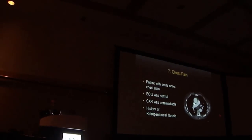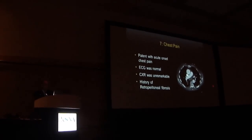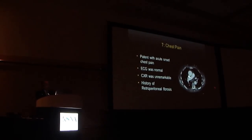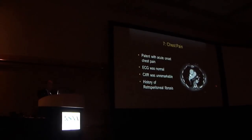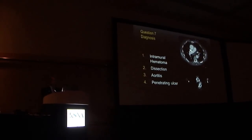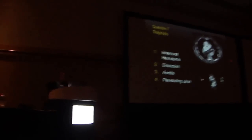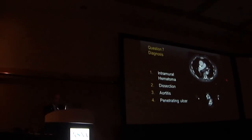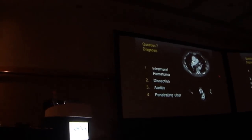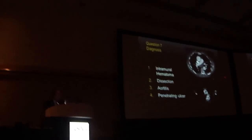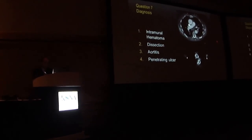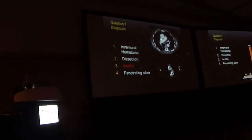Next patient had chest pain with acute onset. ECG was normal and chest x-ray was unremarkable. The patient had a history of retroperitoneal fibrosis — and there's a reason that's mentioned. CT with contrast and a PET-CT of the same patient were reviewed. Differential considerations were intramural hematoma, dissection, aortitis, or penetrating ulcer of the aorta. 89% correct — that's impressive.